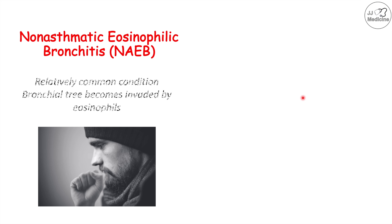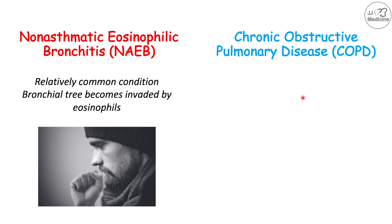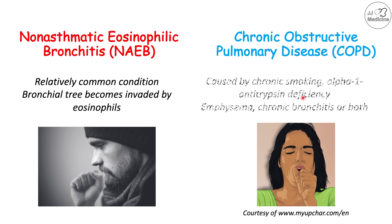There are some other important causes as well. One is non-asthmatic eosinophilic bronchitis, or NAEB — a relatively common condition involving eosinophilic invasion into the bronchial tree, which should be considered after other causes have been ruled out. Another important cause is chronic obstructive pulmonary disease, or COPD, which occurs in patients with a history of chronic smoking — especially after at least 15 pack-years — or in patients with alpha-1 antitrypsin deficiency. COPD is a grouping of emphysema, chronic bronchitis, or both.